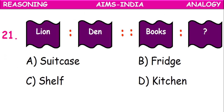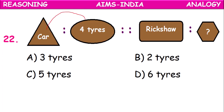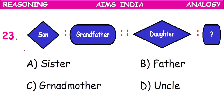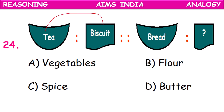If lion is related to den, then books is related to what? Lion stays in a den, so books are kept in a shelf. Suitcase, fridge, and kitchen are wrong — we keep books in a shelf. Car will have four tights (tyres), then rickshaw will have three. Son is related to grandfather; daughter is related to grandmother. Tea and biscuit is a combination — bread and butter is also a combination. We eat biscuit along with tea.